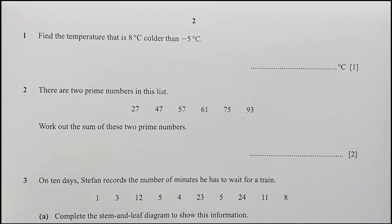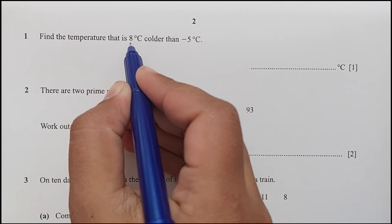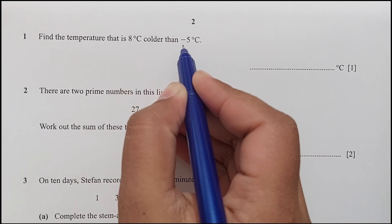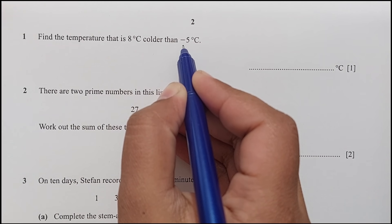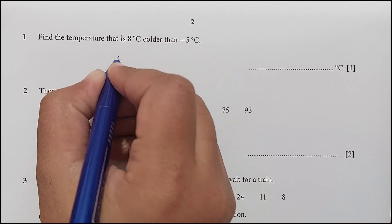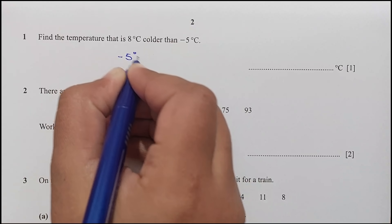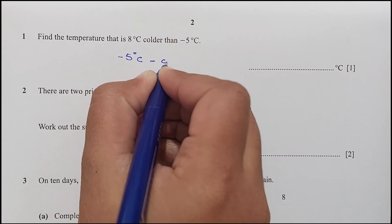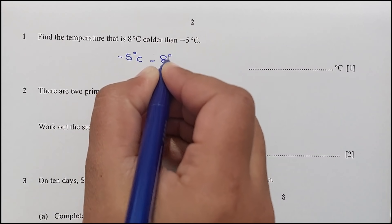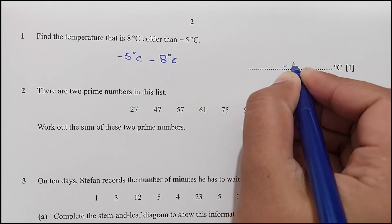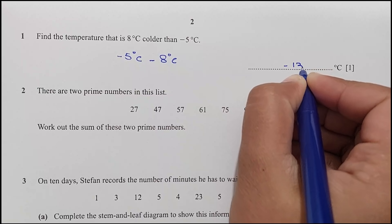Question number 1: find the temperature that is 8 degrees Celsius colder than minus 5 degrees Celsius. Since it's colder, from minus 5 degrees Celsius, 8 degrees colder gives us minus 8, which is negative 13 degrees Celsius.